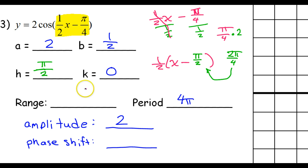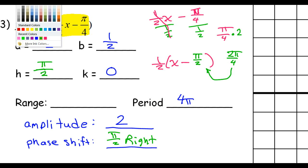π over 2. And that is our phase shift. So, it will be π over 2 to the right. If I do that, I'll have my final answer.